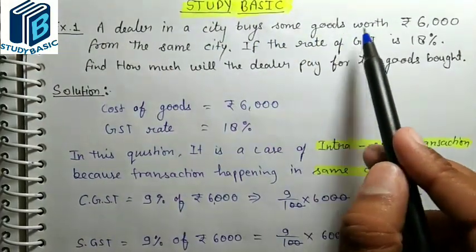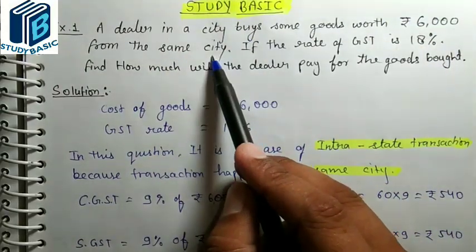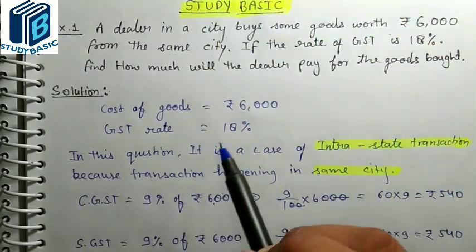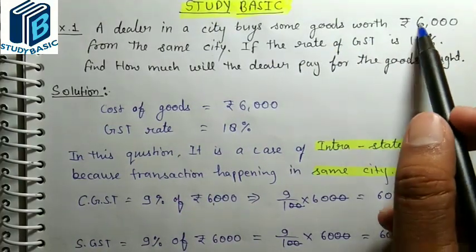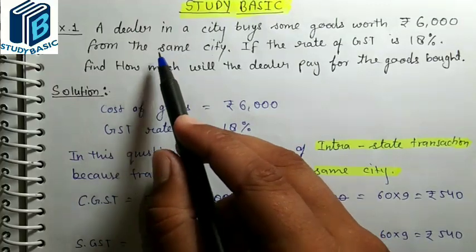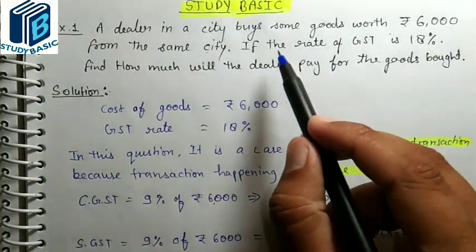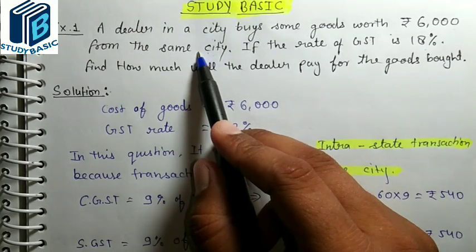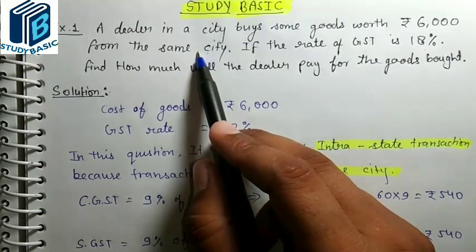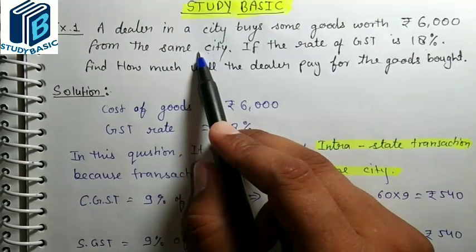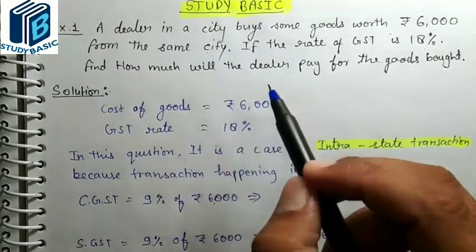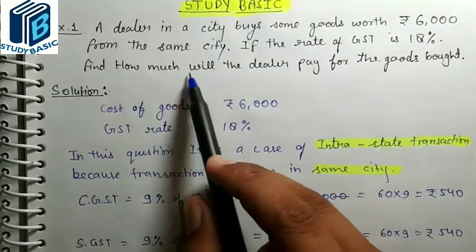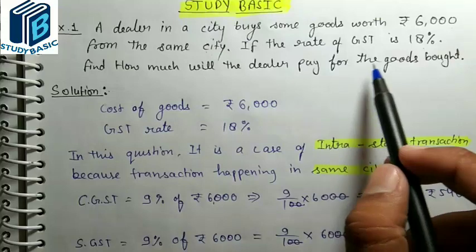The dealer buys goods worth Rs. 6000 from the same city. The goods are also sold in the same city. The rate of GST is 18%. Since the transaction is within the same city, it is an intra-state transaction. Find how much the dealer will pay for the goods bought.